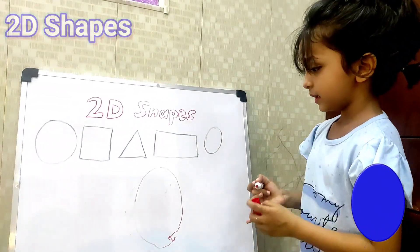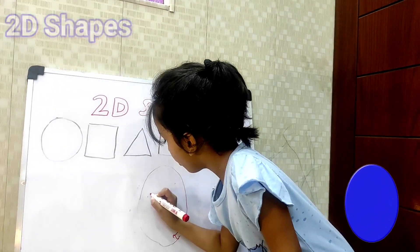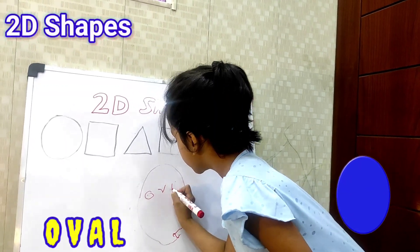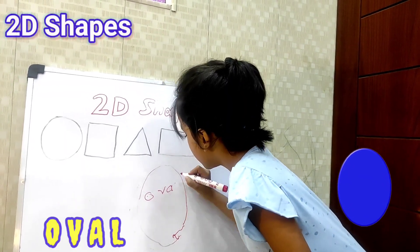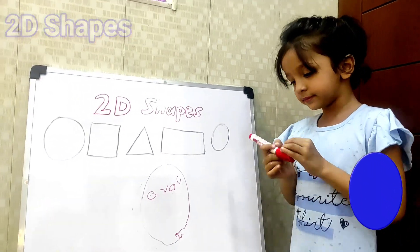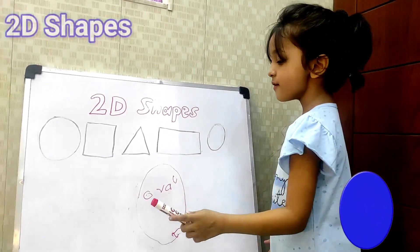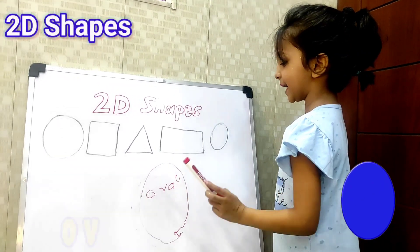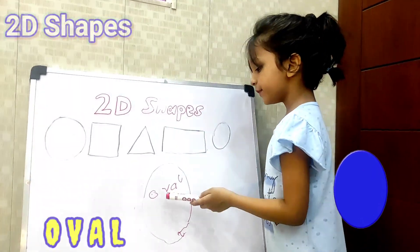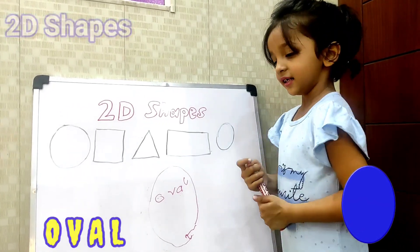This perfect shape is called O-V-A-L. O-V-A-L. O-V-A-L.